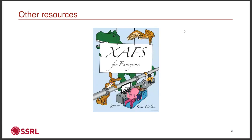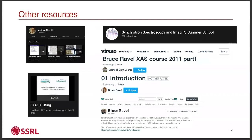The foremost of these is, of course, XAS for Everyone by Scott Calvin. It's a classic and incredibly thorough and actually pretty fun to read. There are also a variety of resources online. Chief among these, in my opinion, is Matt Newville's channel. He's one of the authors of Demeter and also one of the authors of Larch, and he's got a full tutorial on his channel on using Larch for XAS analysis, which will include covering parts of LCF analysis.